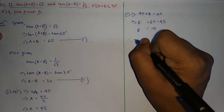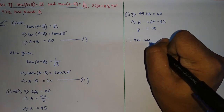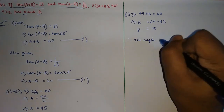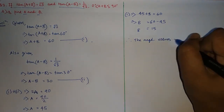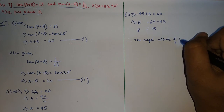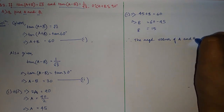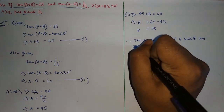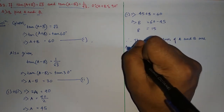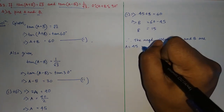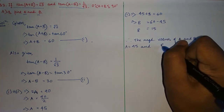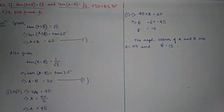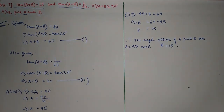So the required values are a = 45° and b = 15°. That's it for today — meet you in the next class. Thank you.